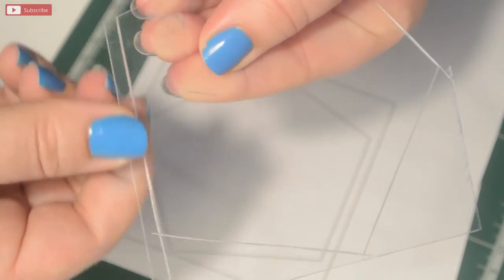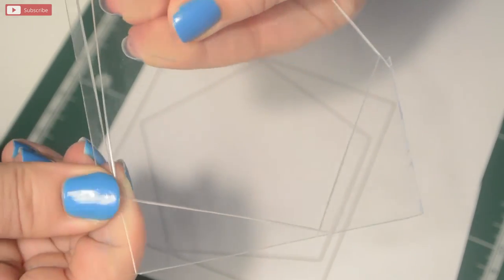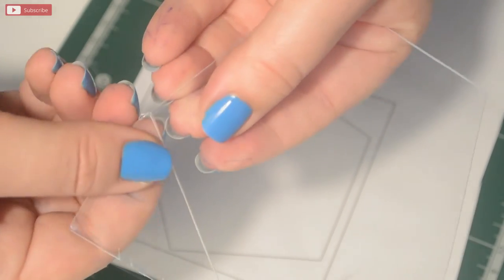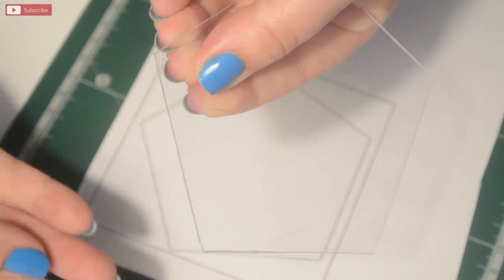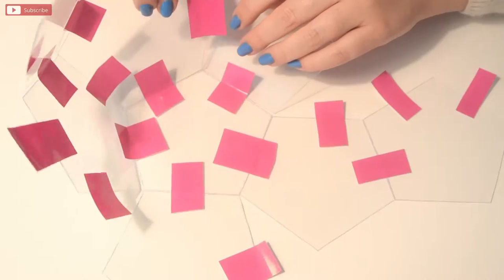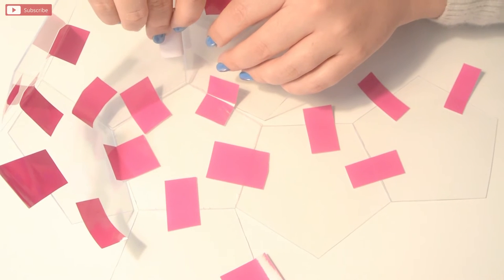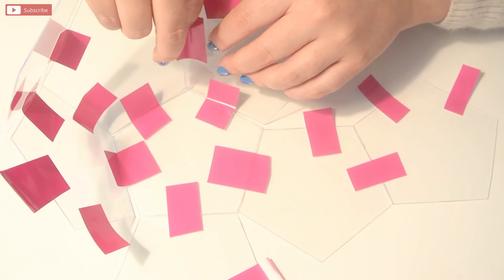Then you want to do this again until you have 11 pieces. Now you want to lay the 11 pieces down like the template is showing you and then you want to tape it together until you have a cube.